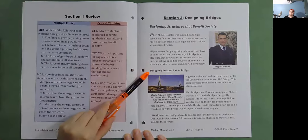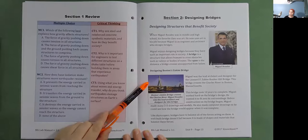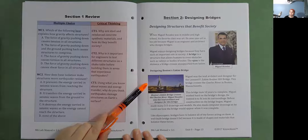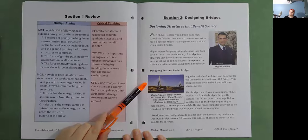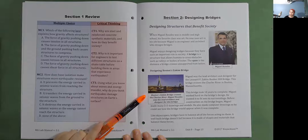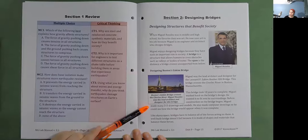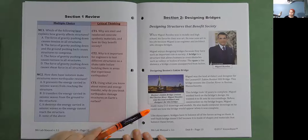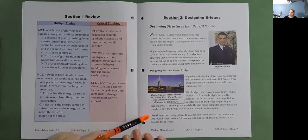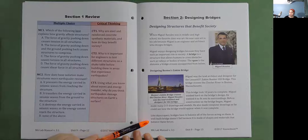Designing Boston's Zakim Bridge. Miguel was the lead architect and designer for the Leonard B. Zakim Bunker Hill Bridge. This bridge crosses the Charles River in Boston, Massachusetts. The bridge took 10 years to complete. Miguel worked hard on the bridge's design. He wanted it to fit into its surroundings. Before construction on the bridge began, Miguel made many 3D drawings and models. He also made computer drawings so he could see how the bridge would appear when it was complete. Like skyscrapers, bridges have to balance all of the forces acting on them. A well-built bridge doesn't fail because it is made of shapes and materials that balance these forces.